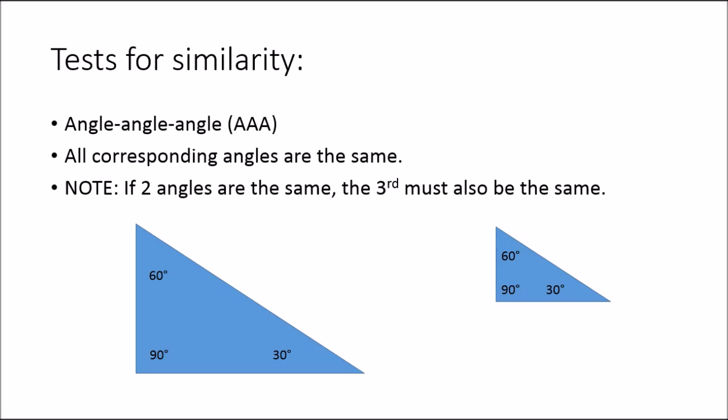The first one is angle-angle-angle. Now if you've got three corresponding angles for a triangle that are the same, then they must have the same shape.